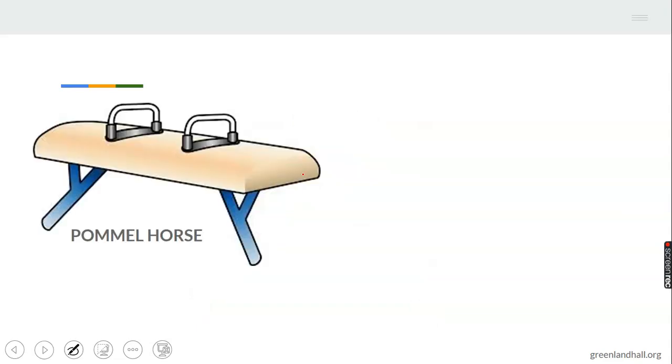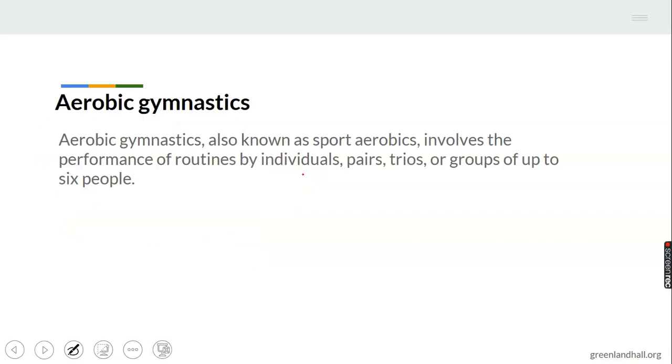Number two, we have aerobic gymnastics. For this type of gymnastics, also known as sports aerobics, it involves performance of routines by individuals. It can also be done by pairs, it can be done by trios - that means three people - or it can be done by a group of people, up to six. Sometimes an individual can do aerobic.